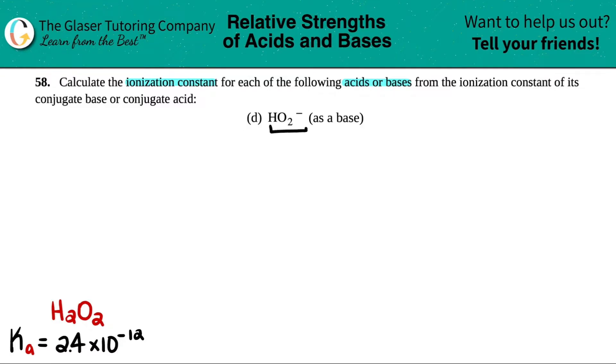So in this case, we have HO2 minus. We have to find the ionization constant for that, but they're telling us that it's going to be acting as a base. So thank you for that. That means that we're going to be solving for Kb, B for base.